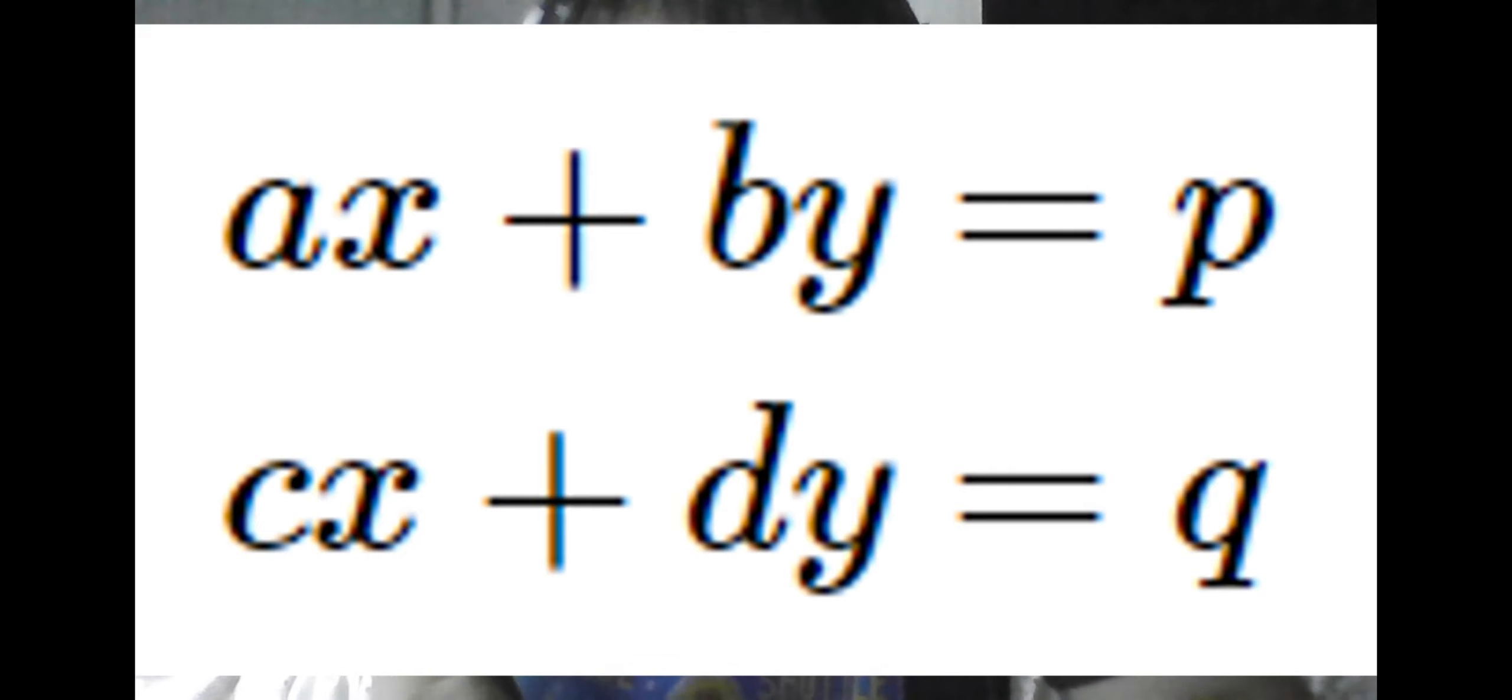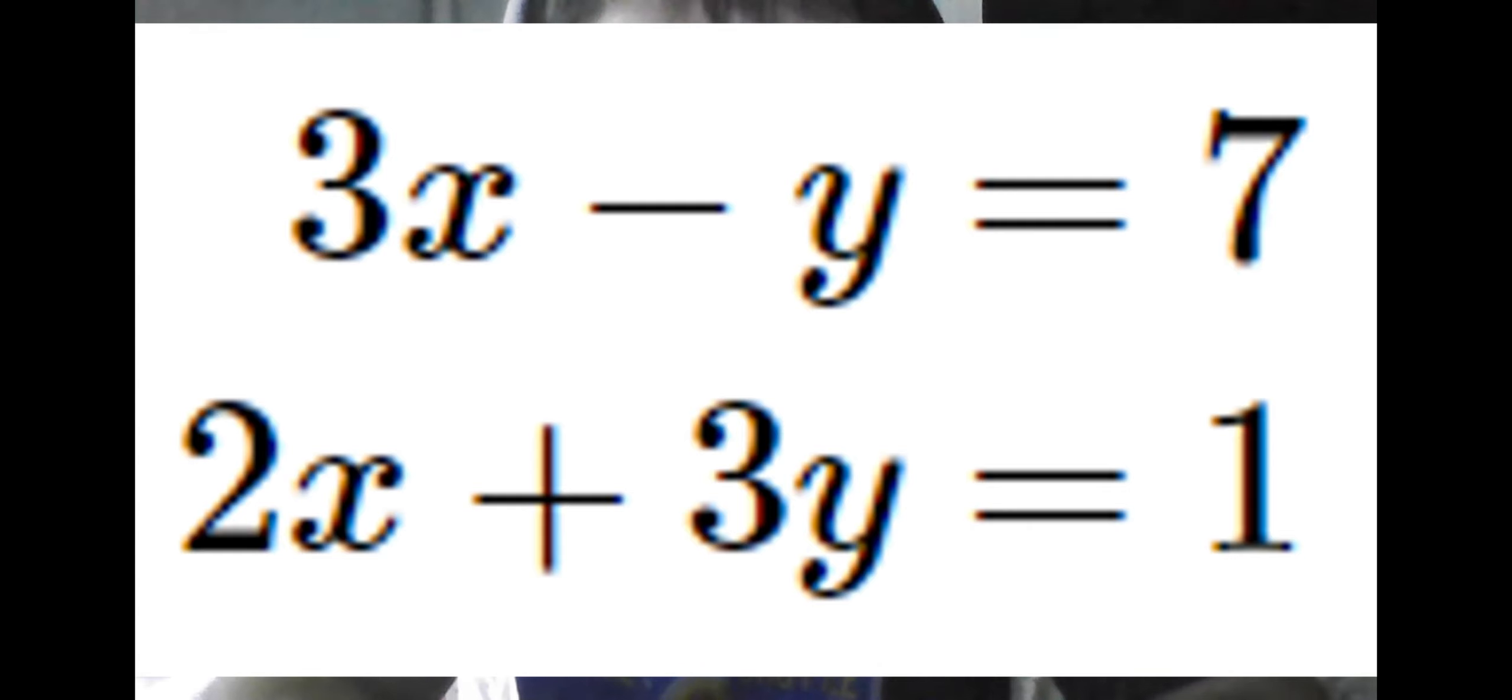And this method is called the method of substitution, as a reference to how you are substituting one variable with reference to the other. So in this case, we can see we can get y easily by itself by doing 3x minus 7, and then plugging this in for y in the other equation. This simplifies to x equals 2, and we can compute y directly because we know our exact value for x and an exact value for y in terms of x. Doing this tells us y equals negative 1.